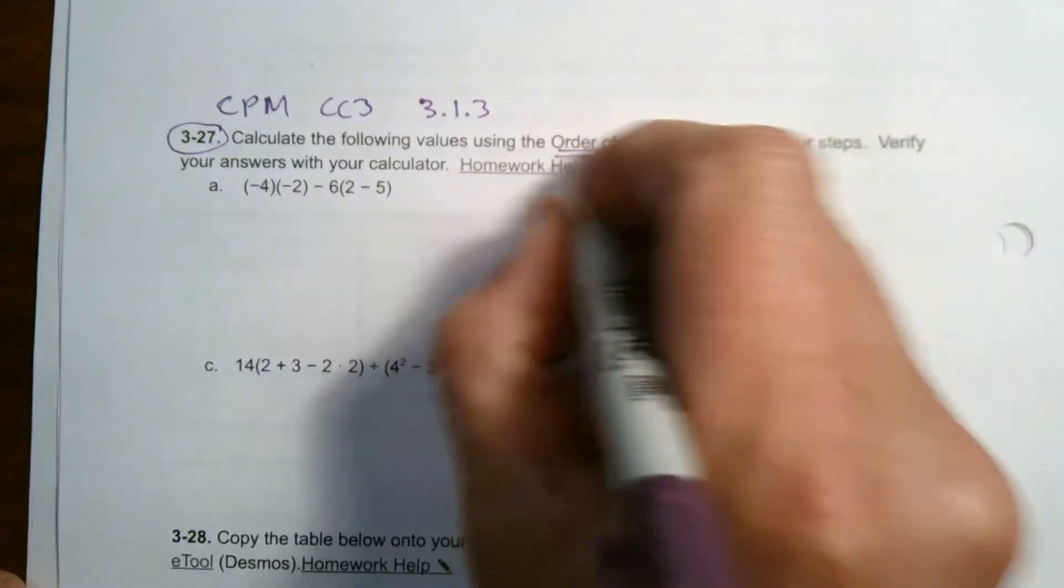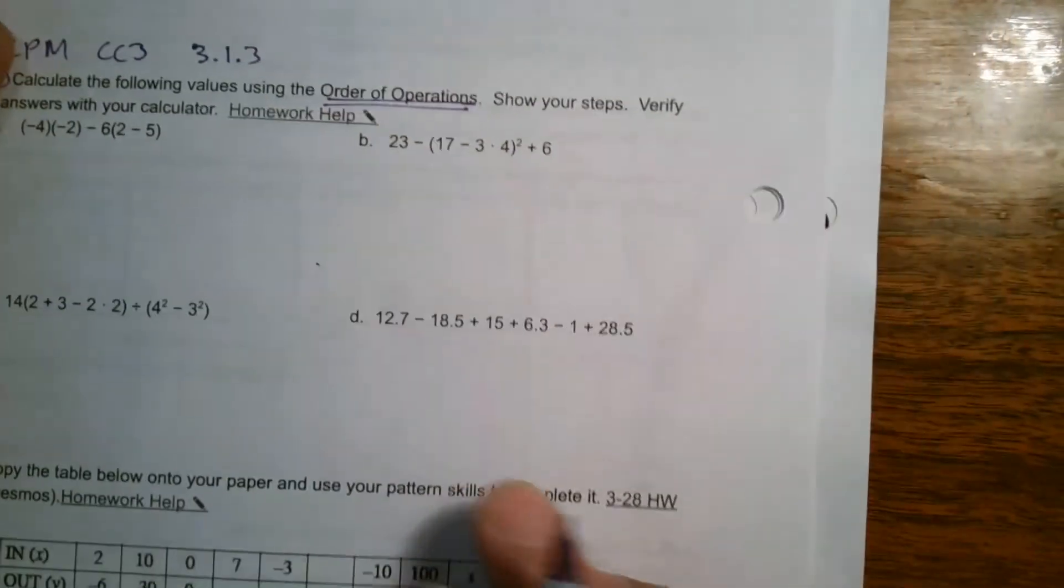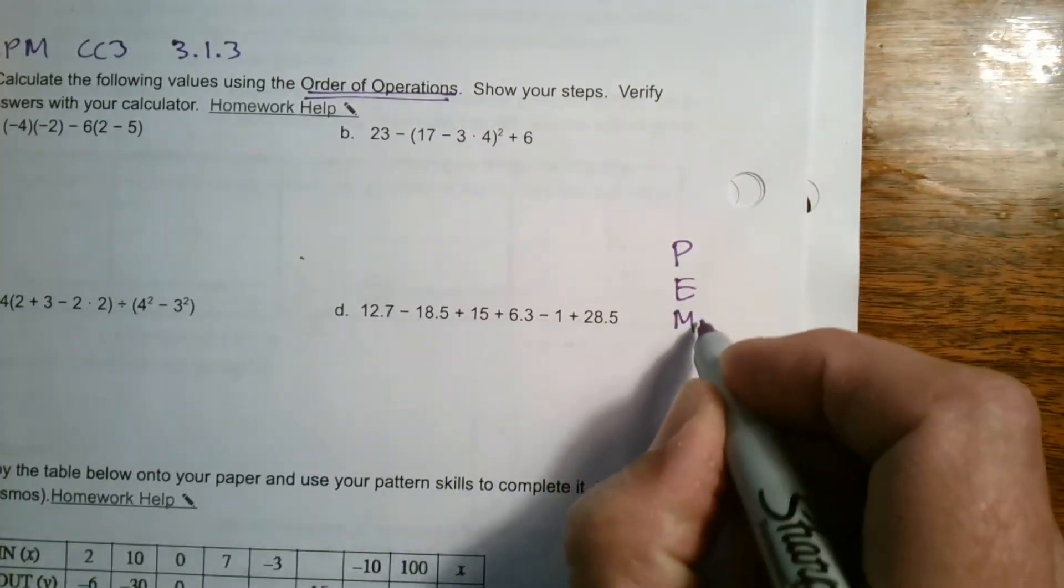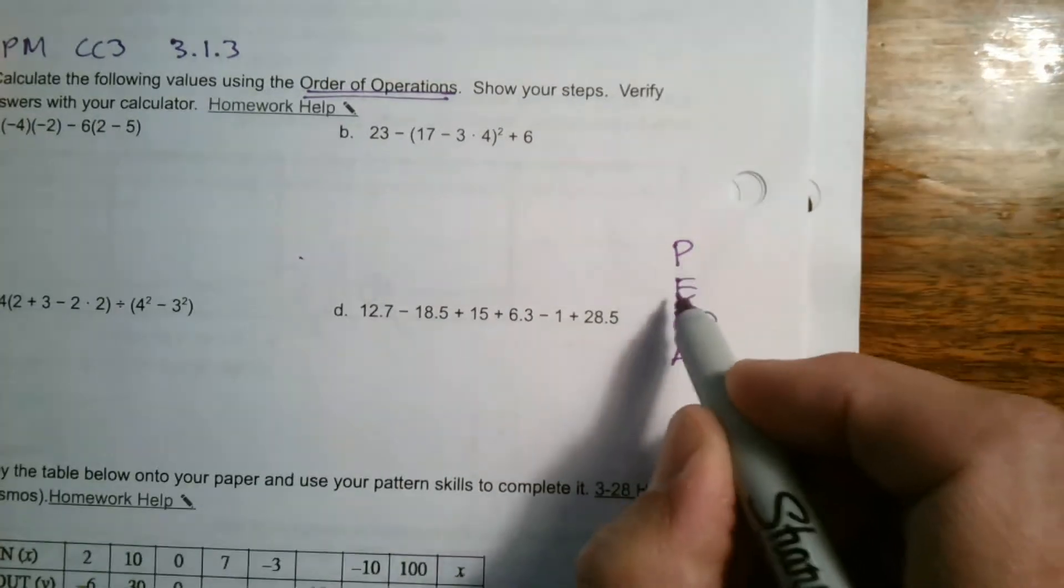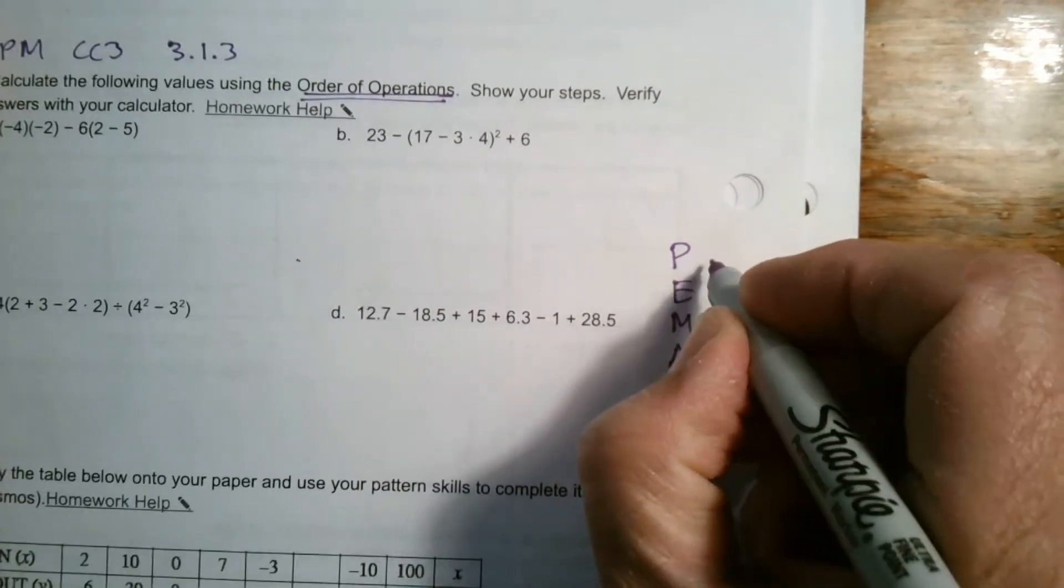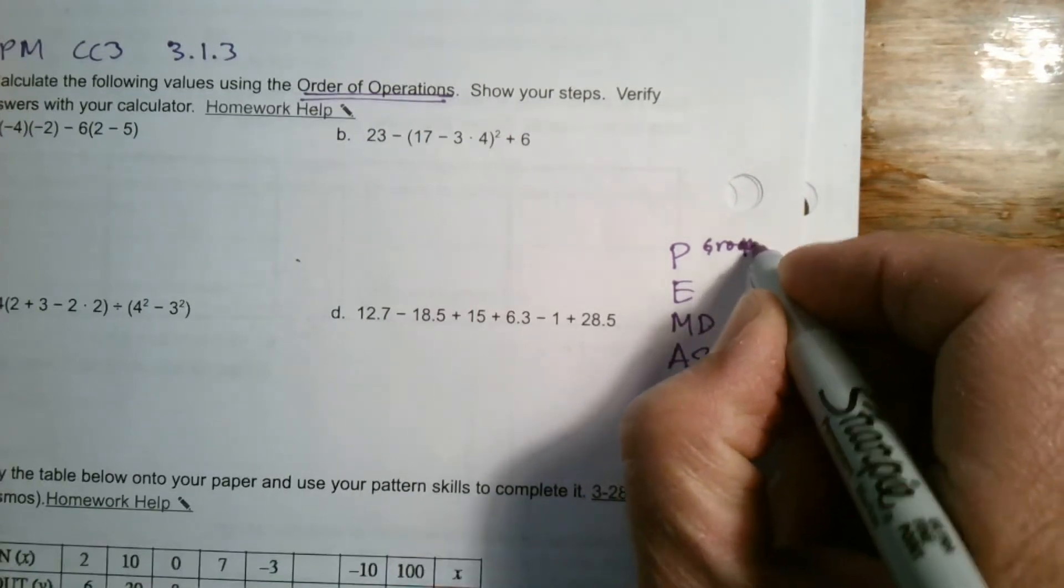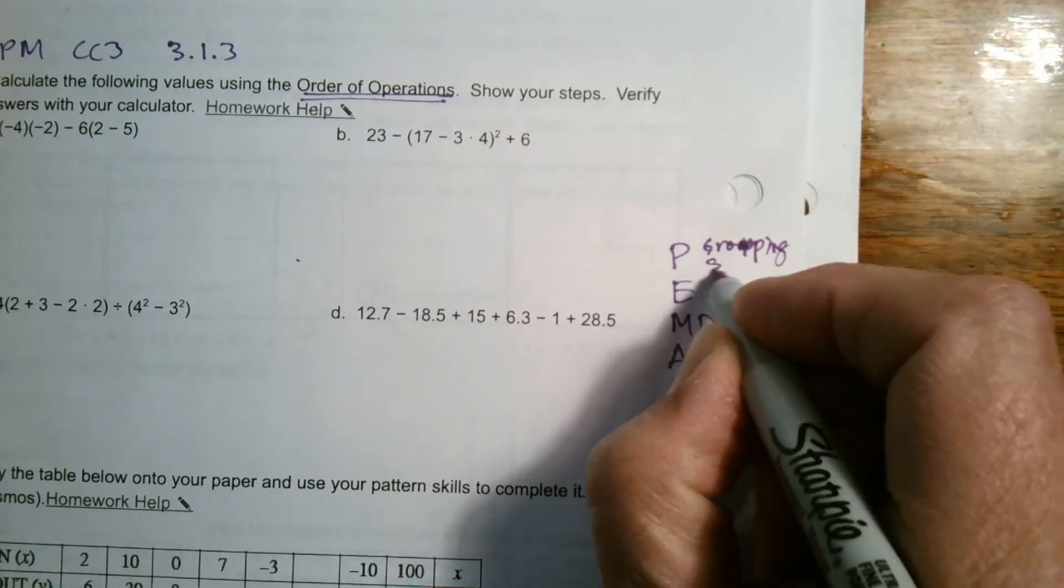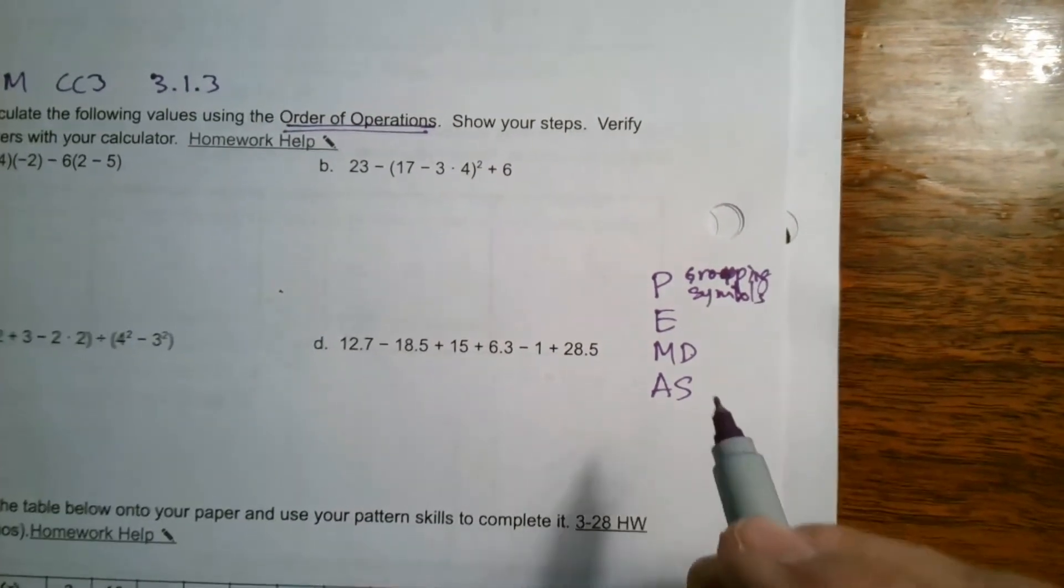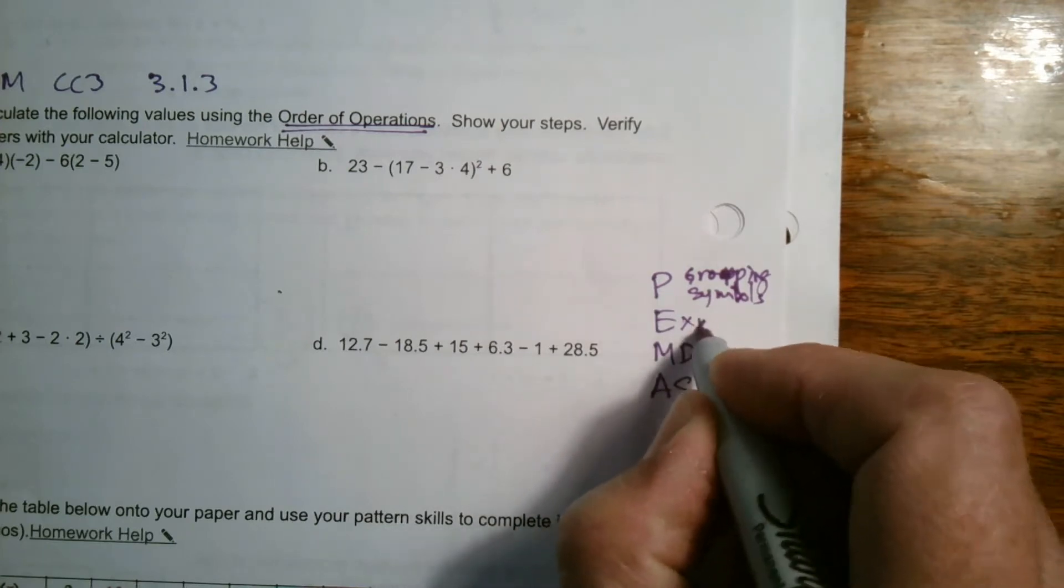Okay, so the key thing here is order of operations. We got to remember what our order of operations are. So I'm going to write them over here so we have them. Order of operations is known as that acronym PEMDAS. Some remember it as please excuse my dear Aunt Sally. The P represents parentheses or grouping symbols. Sometimes you have brackets, sometimes you have other types of grouping symbols, but parentheses are most common. Exponents is the E.